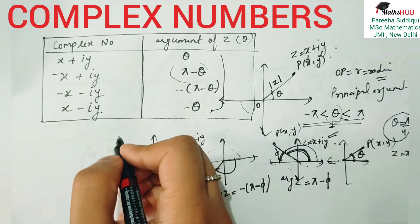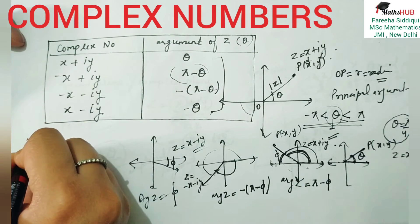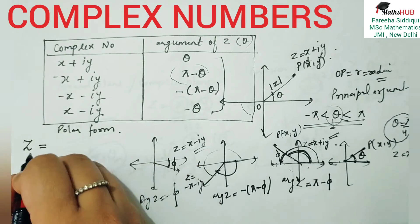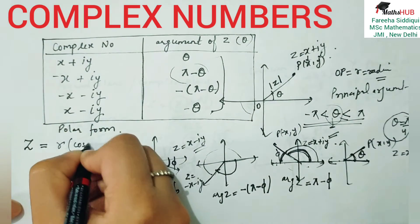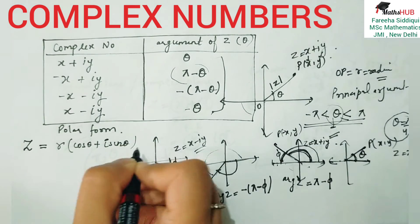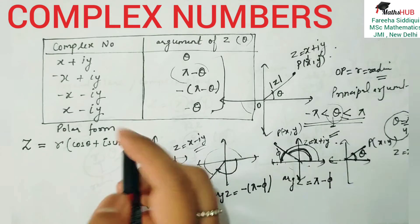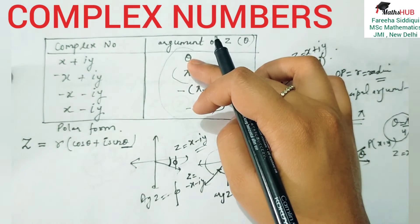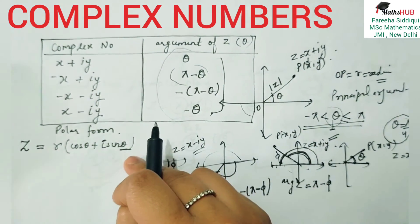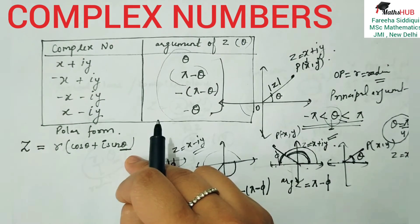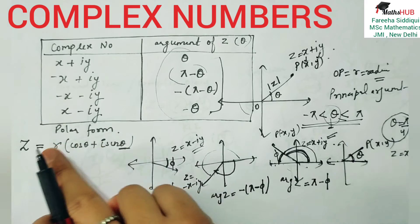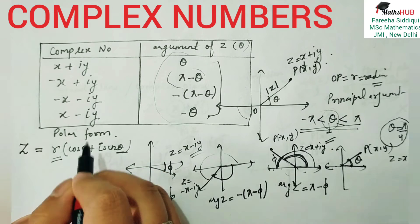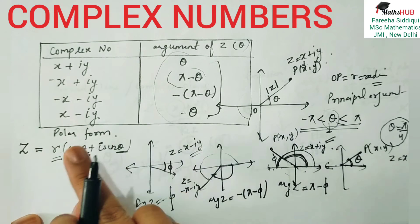Now the main thing: polar form. Polar form z is written as: z = r(cos θ + i sin θ). This is the polar form of any complex number. In this, you have to use theta from the quadrant table. If the complex number is in the first quadrant, use theta directly; if in the second, find pi minus theta and put that value. So first you find r (the radius), then find theta, and then put both values into the polar form formula to convert the complex number into polar form.